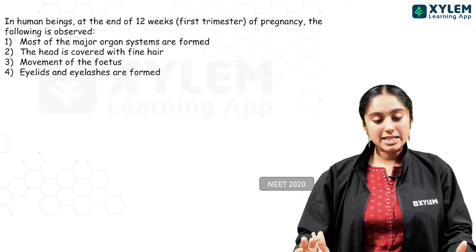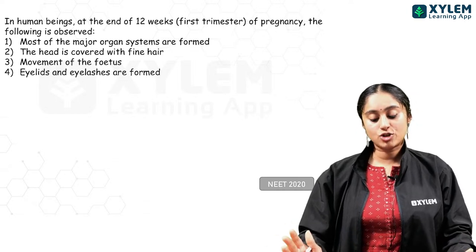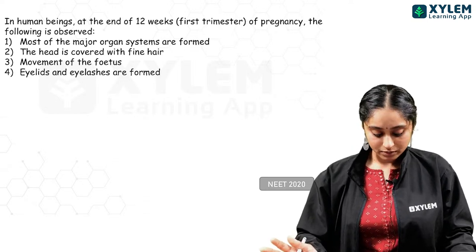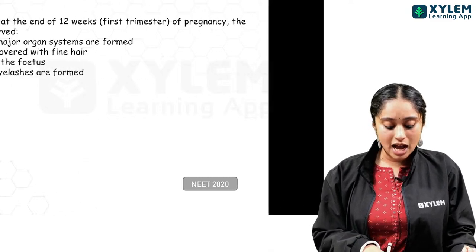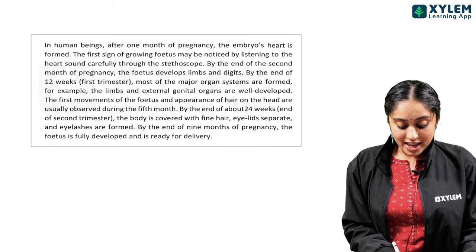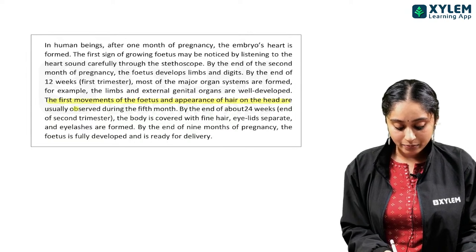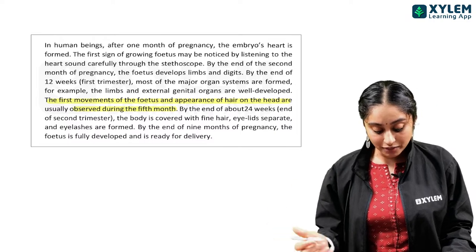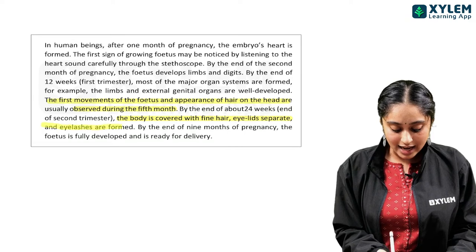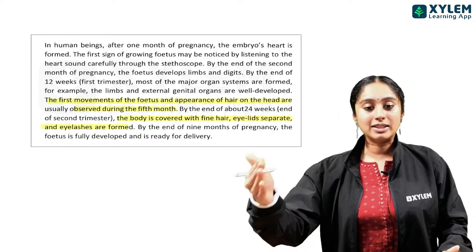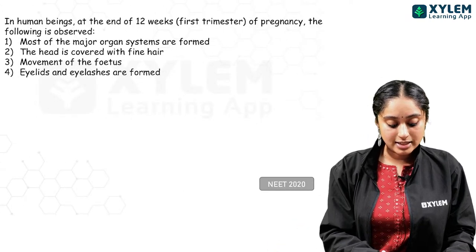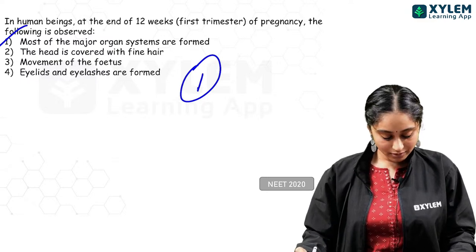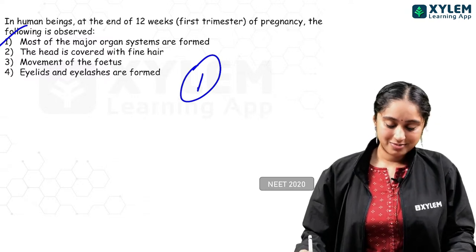NEET 2020 gestation question: at the end of 12 weeks (first trimester) of pregnancy, what is observed? Movement of fetus and appearance of hair on the head are observed only during the fifth month. Body covered with fine hair, eyelids, and eyelashes appear towards end of second or into the third trimester. During the first trimester, most of the major organ systems are formed. Answer: option 1.